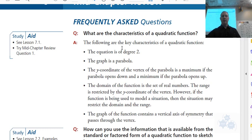Okay, so it's degree 2, so that means on the x, we have an x squared. There's got to be an x squared in the equation, and of course the coefficient can't be 0. The graph is a parabolic shape. The y-coordinate of the vertex of the parabola is the maximum if it opens downward, and the y-value is the minimum if it opens upward.